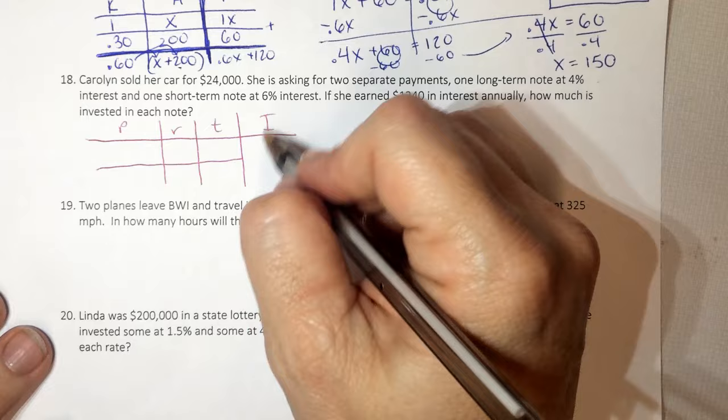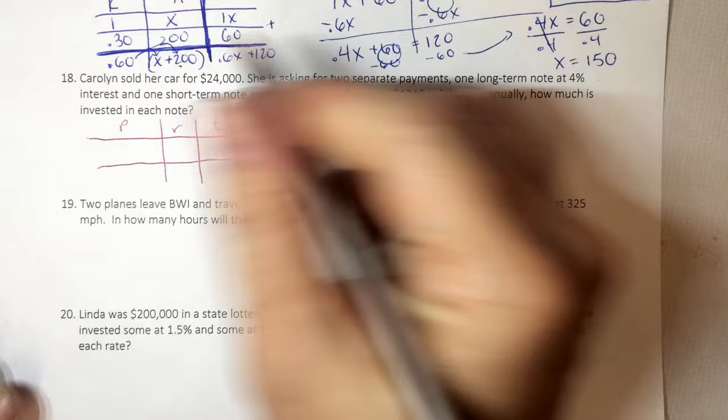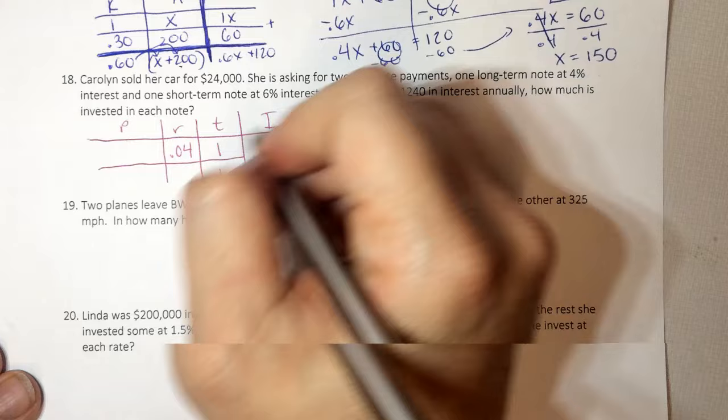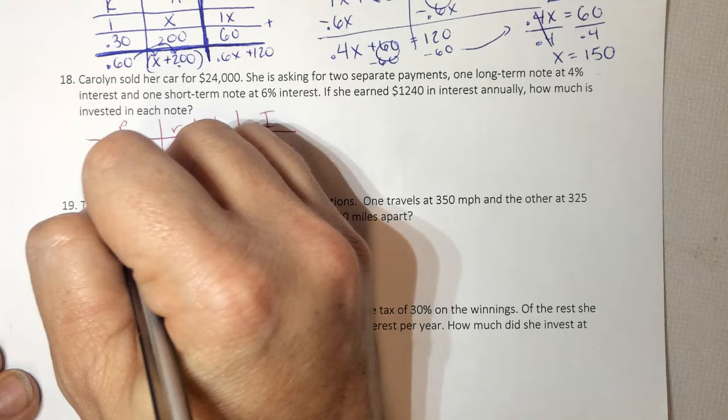I stands for what I'm earning, my income. So this is 1,240. 1,240 interest annually. It tells me annually and it doesn't say anything else about time. So time is one year. I know that she invested some of it at 4%, so 0.04. And some of it at 6%, so 0.06. And I don't know how that $24,000 is split. My first unknown is always X. And then remember, when I'm trying to find the remainder, I take your total minus X.